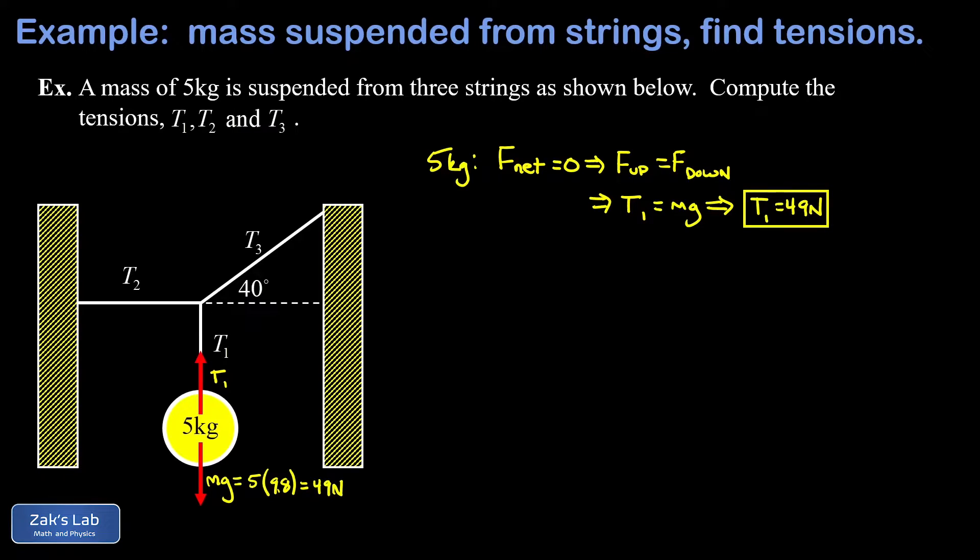Now it's a little tricky figuring out what to analyze next, because we're done looking at all the forces acting on the five kilogram mass. Actually, what we're analyzing next is the junction between these three strings. I could say it's the knot that ties them together.